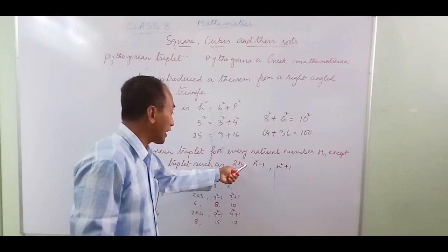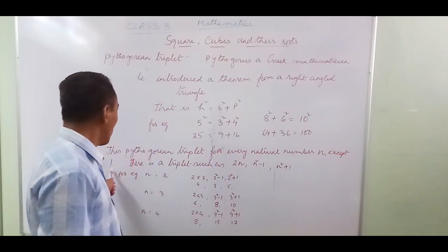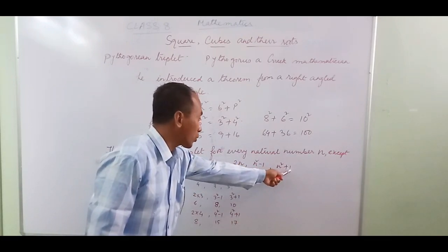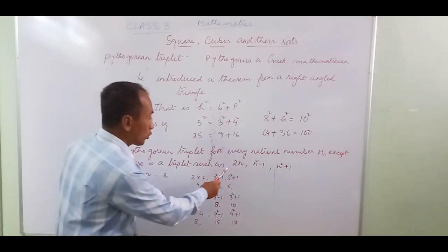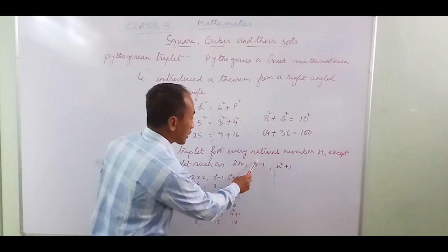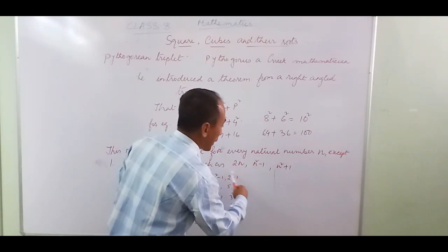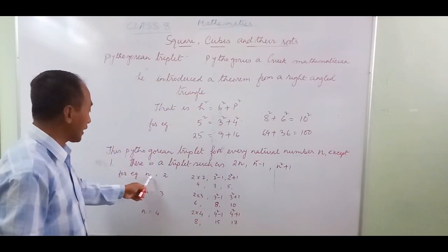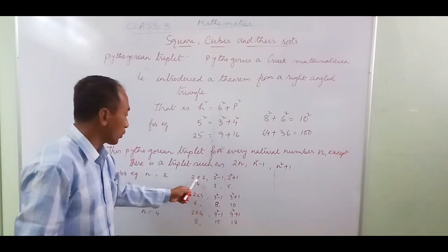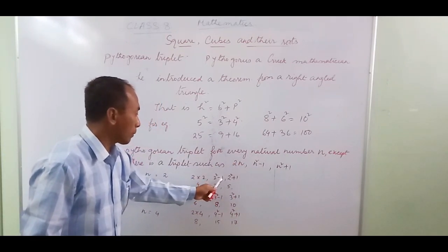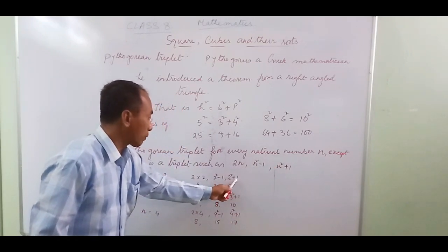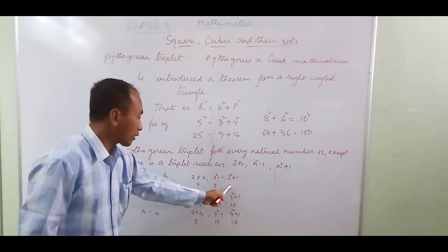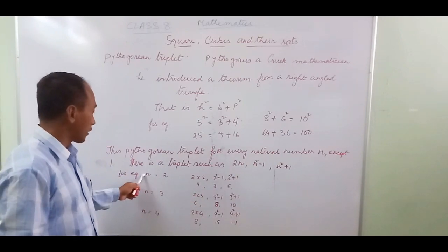For any natural number N, the Pythagorean triplet is given by: 2N, N squared minus 1, and N squared plus 1. For N equals 2: 2N is 4, N squared minus 1 is 3, N squared plus 1 is 5. So the Pythagorean triplet for natural number 2 is (3, 4, 5).